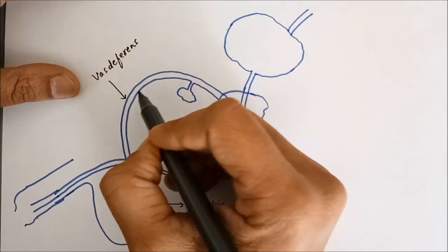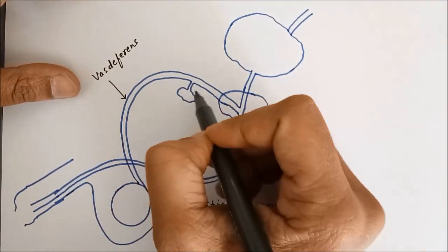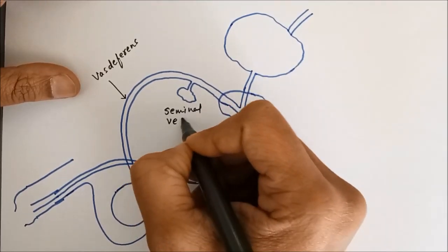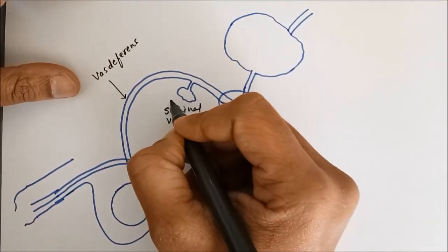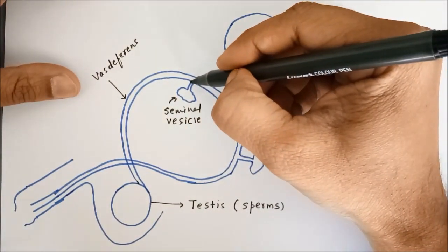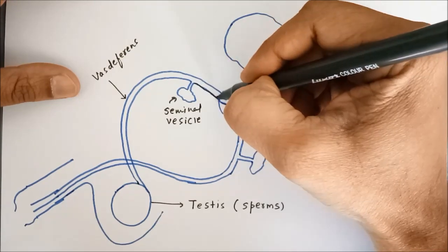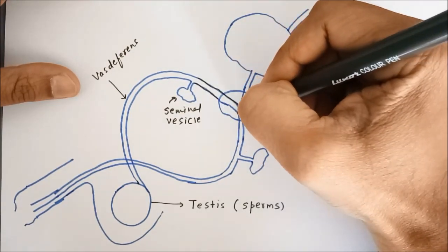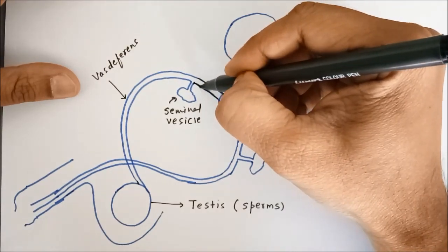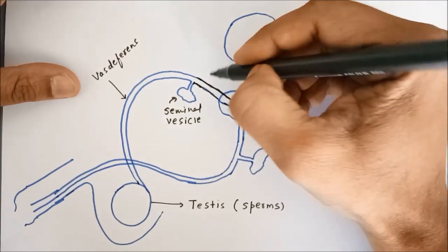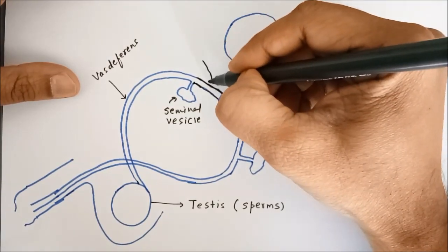Then here is a small gland called seminal vesicle. This one is a seminal vesicle. Then this duct which starts from the seminal vesicle till here, so the starting point of the duct from here till here, this is called ejaculatory duct.